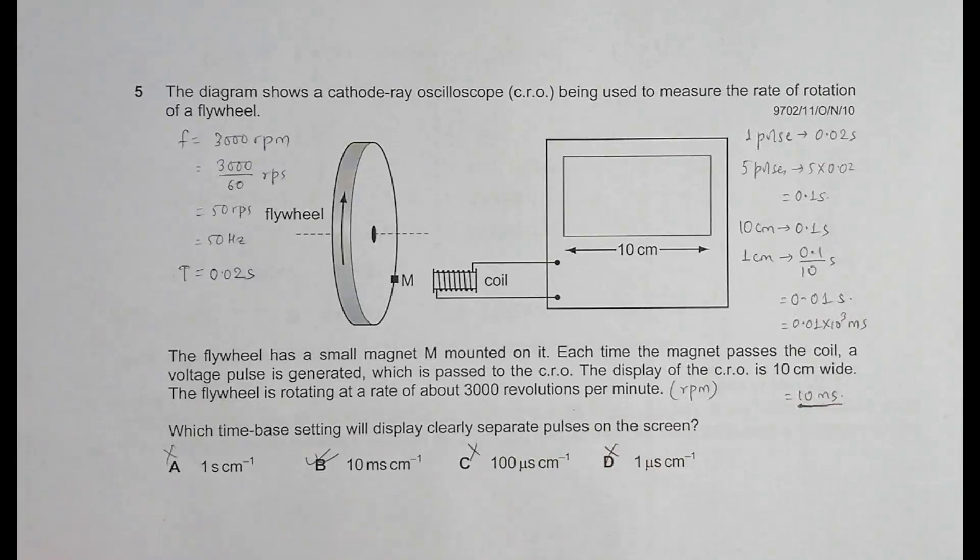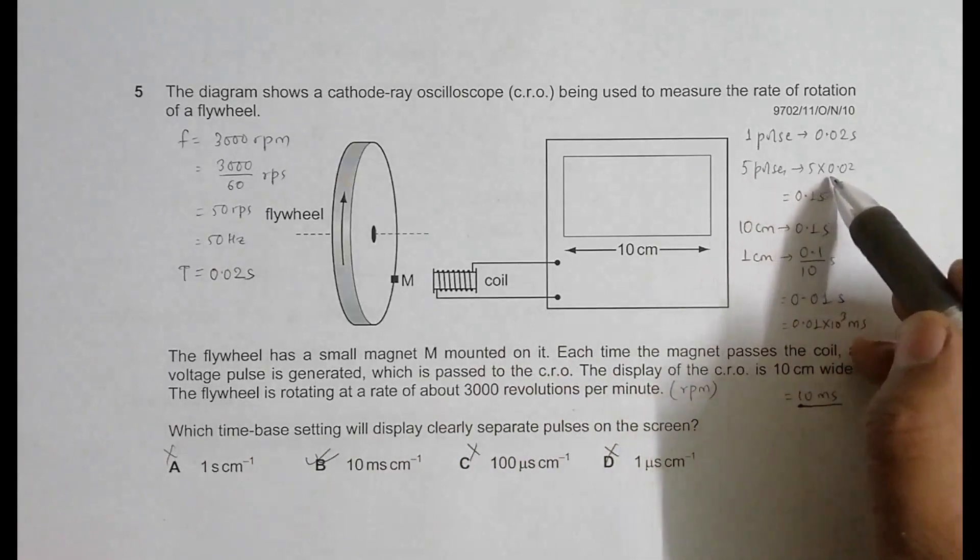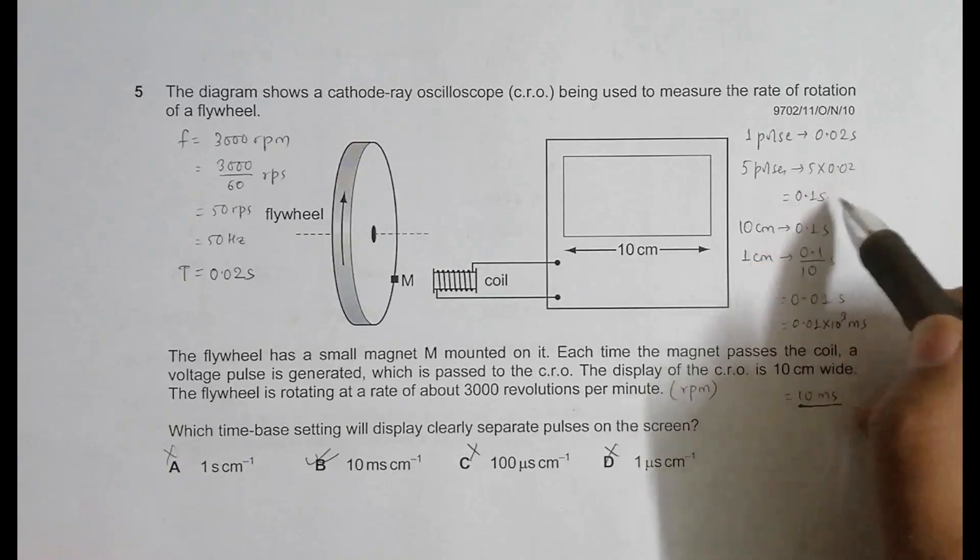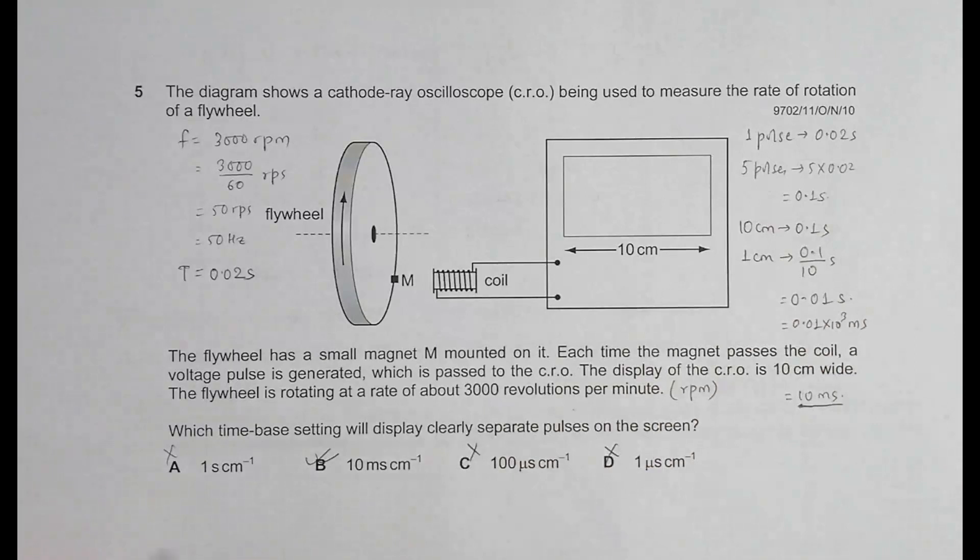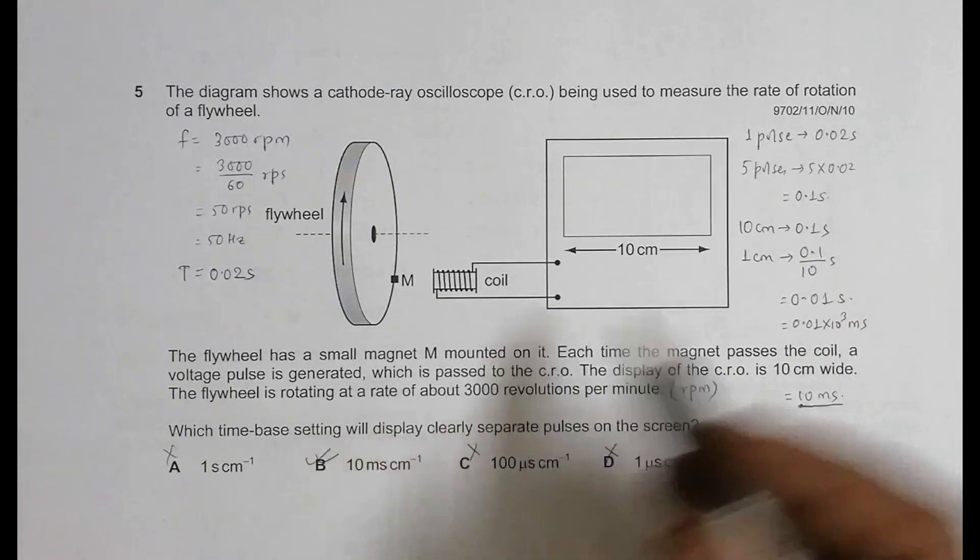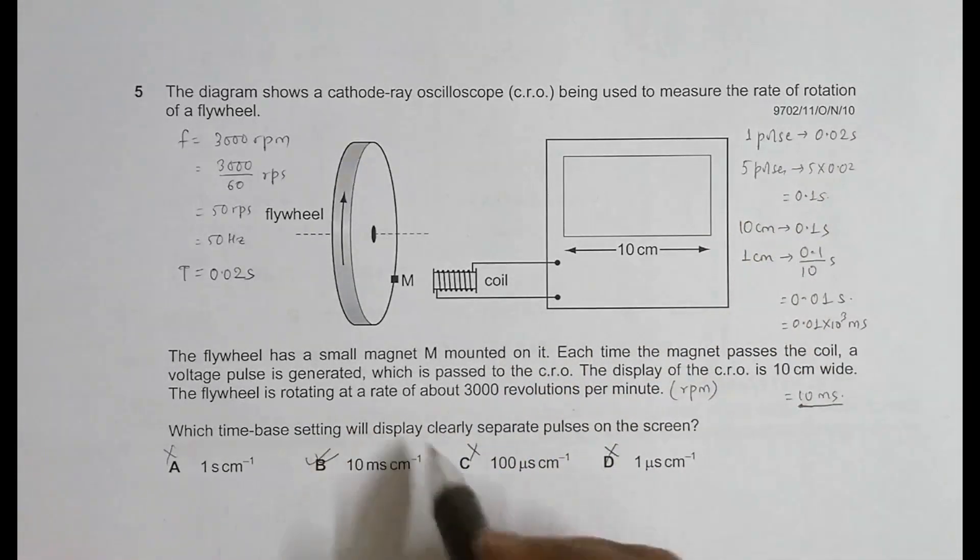10 milliseconds per centimeter is the appropriate time base setting to show these pulses clearly. But remember, if somebody wants to show just two pulses, the answer would be 4 milliseconds. In that case, we'd have to go for whichever choice is nearest, which would still be 10 milliseconds. With two or three pulses, the nearest answer will still be 10 milliseconds, so the correct choice is definitely 10 milliseconds per centimeter.